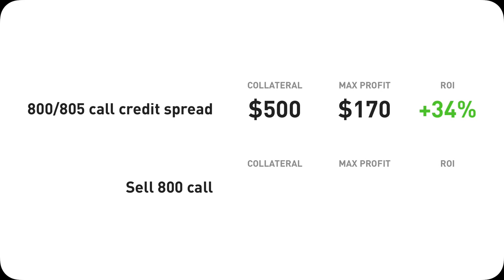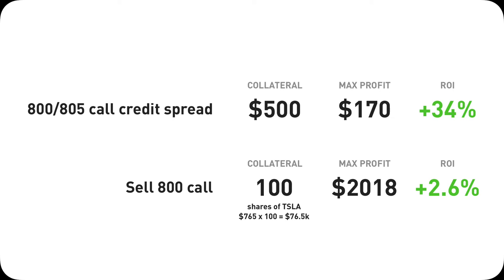Over time, SPY only returns 10%. However, by just selling an $800 call by itself, it requires you to have 100 shares of Tesla. At this market rate of $765 per share, meaning you need to have at least $76,500 in your account, and your max profit is $2,018 — meaning a 2.6% return. Certainly you need more money to begin with and you can make more in dollar amounts, but way, way less percentage of return. If you only have $500 in your account, there's no way you can sell an $800 Tesla covered call, because you're not covered by 100 shares — but you can certainly do a call credit spread.